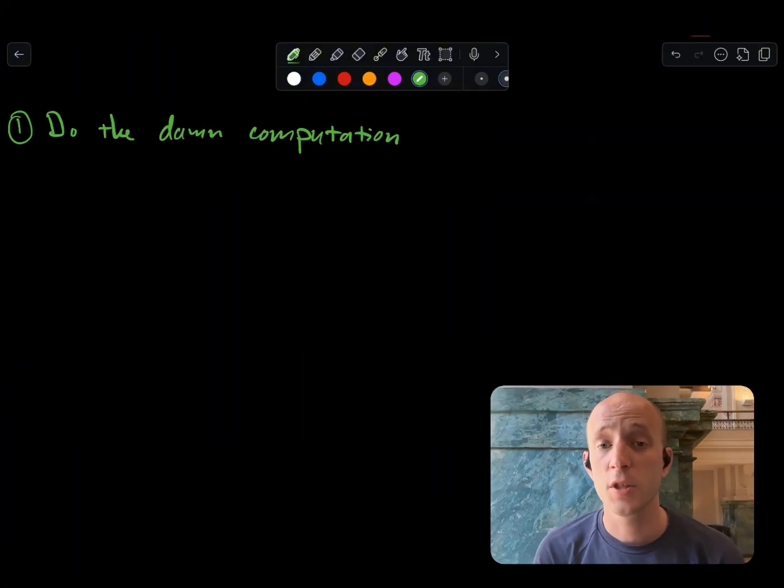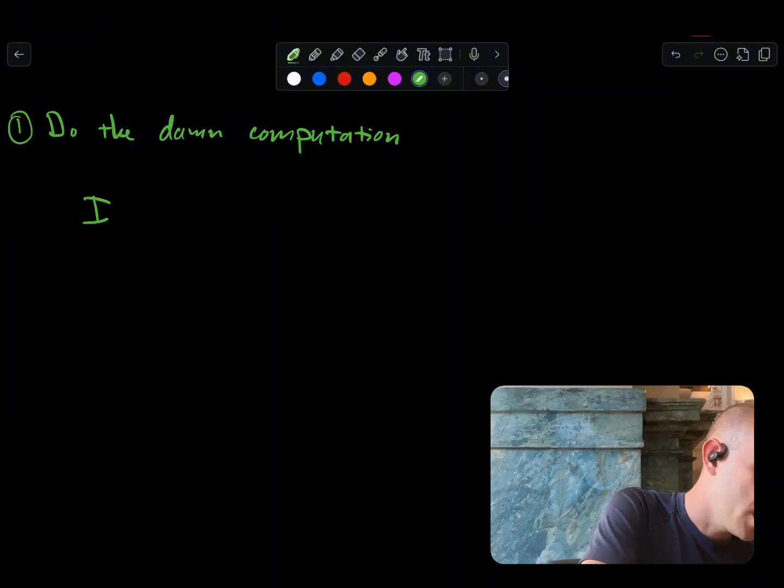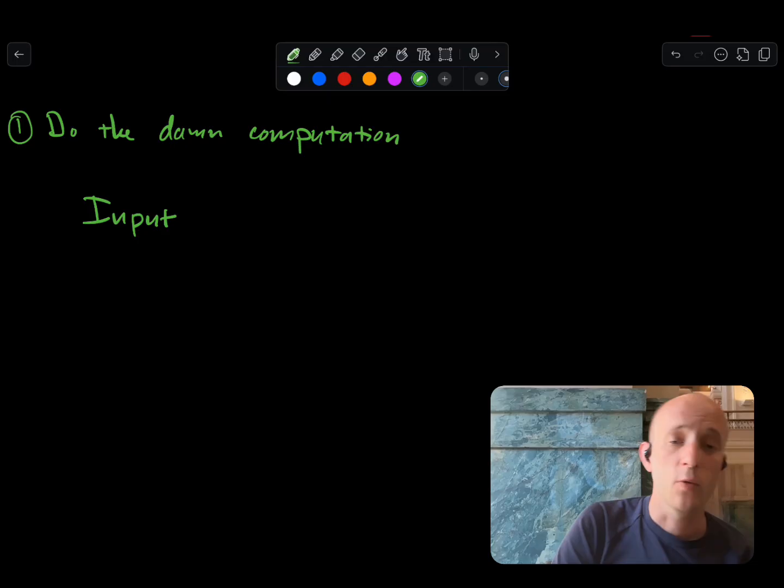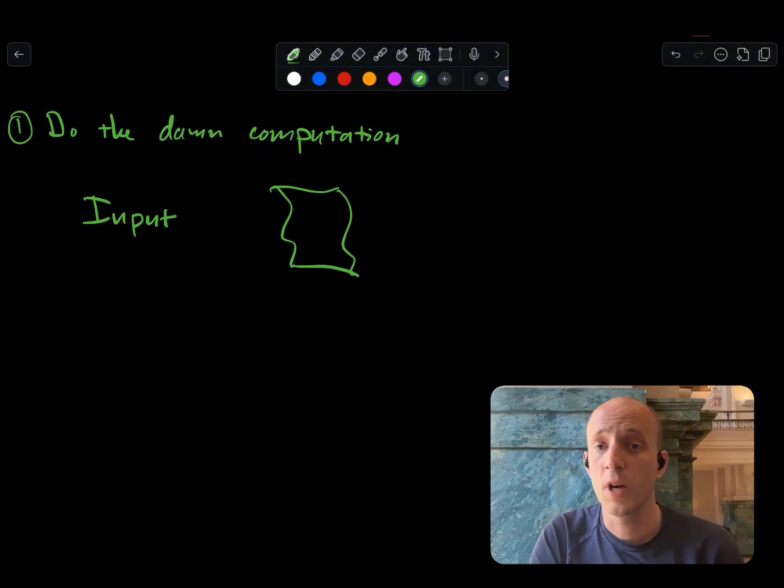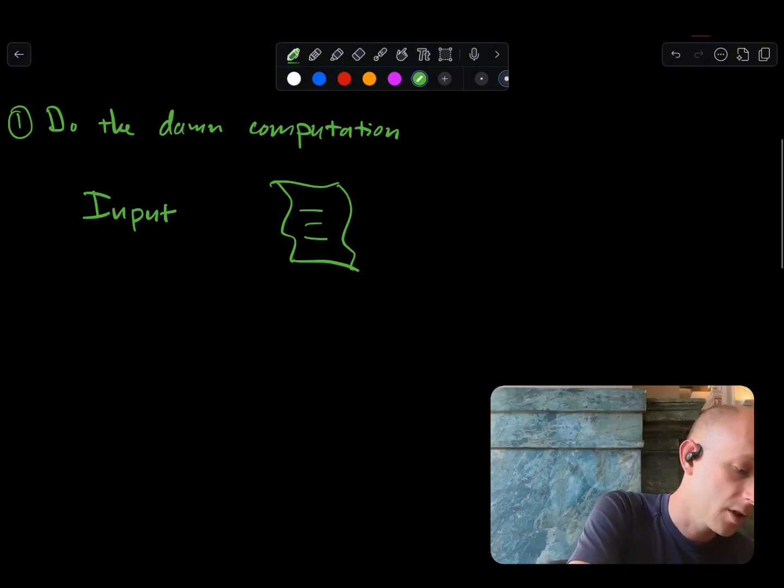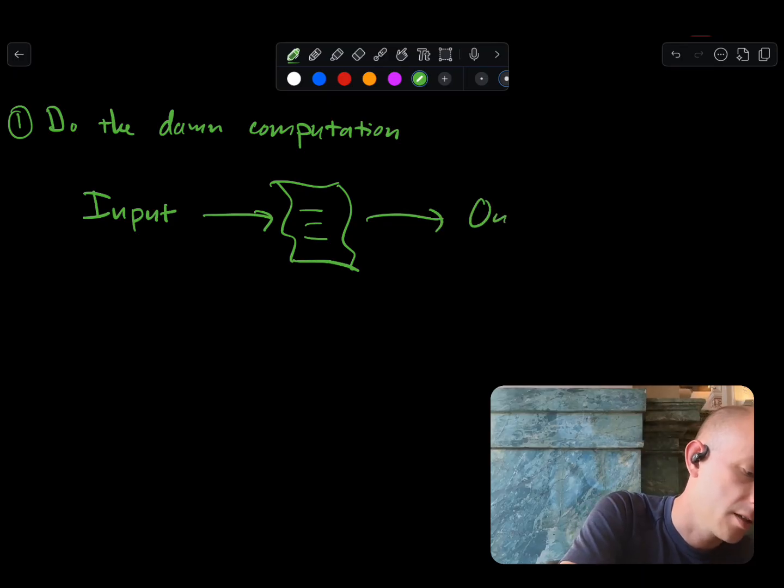So the first approach is to just do the damn computation on Bitcoin. The computation has an input and an output, and the computation determines whether or not the input and output are correct for whatever logic we want to reason about. So let's look at what this actually does. We take the input of our computation and we run it directly through a Bitcoin script. What does the Bitcoin script do? Well, it does whatever the logic tells us we're supposed to do, whatever the computation is that we care about. We include the input and the script on-chain and check whether or not the output matches.